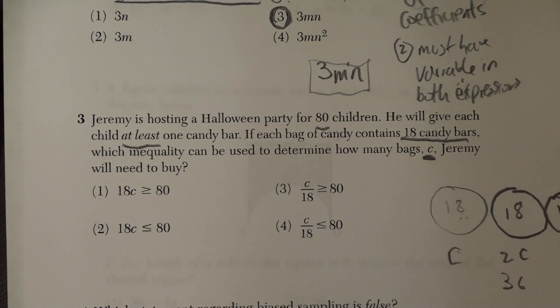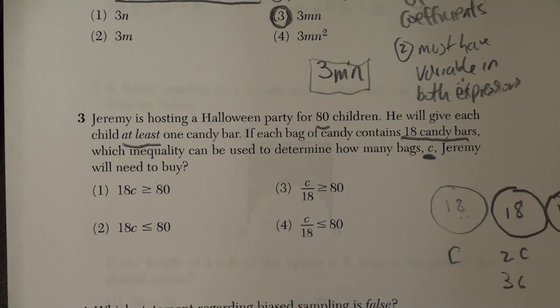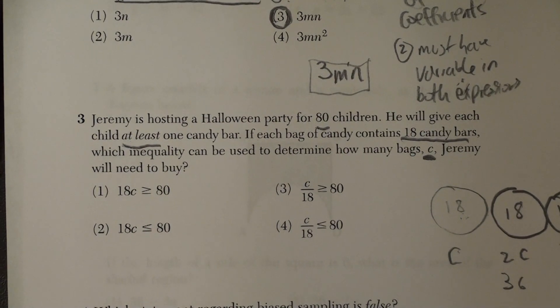If that means at least 80, 81, 82, 83 are all fine. So we need 18 times C to be greater than or equal to 80.